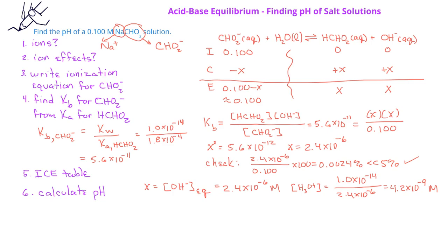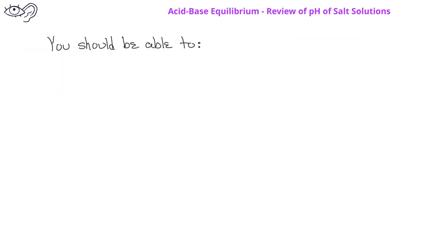And then we can use the pH equation so that pH equals negative log 4.2 times 10 to the minus 9, or the pH of a 0.1 molar hypochlorite ion solution is 8.38. By now, you should be able to identify the steps to find the pH of a salt solution. You should also be able to calculate the pH of a salt solution.